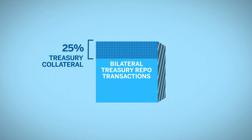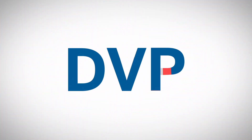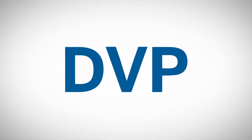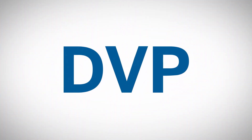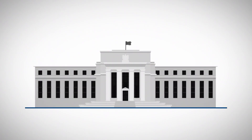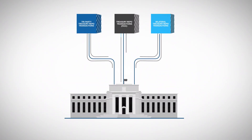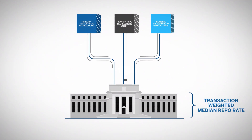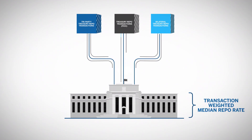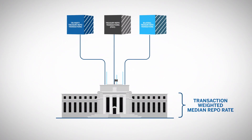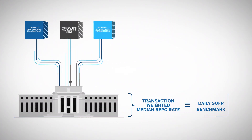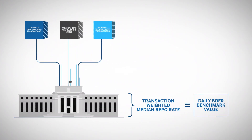After filtering the Fixed Income Clearing Corporation's DVP bilateral repo transaction data, the Federal Reserve Bank of New York will pool the data from the three sources, rank all the repo transaction volumes by their transaction rates from lowest to highest, and then compute the transaction-weighted median repo rate. The transaction-weighted median repo rate becomes the day's SOFR benchmark value.